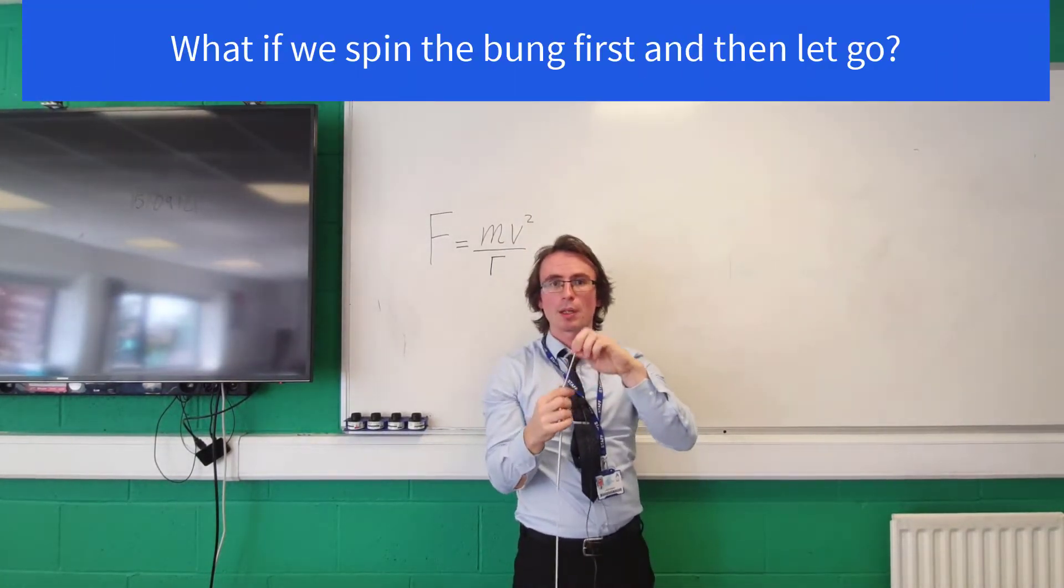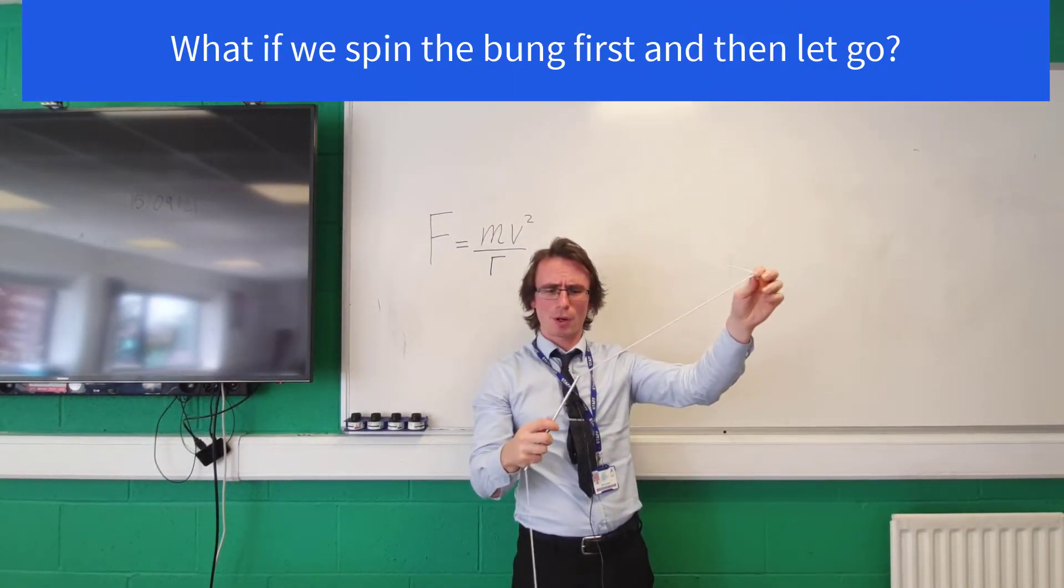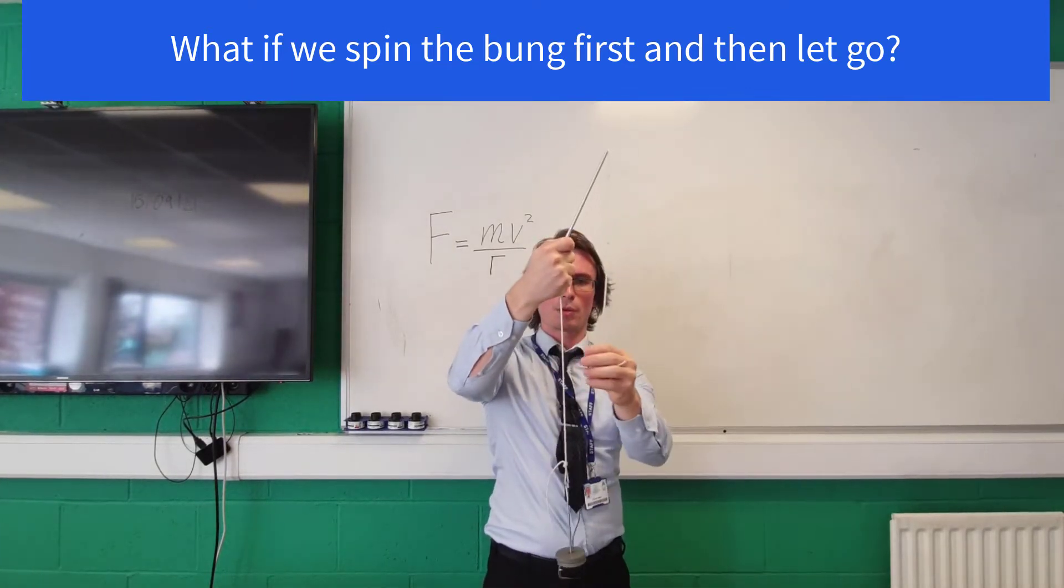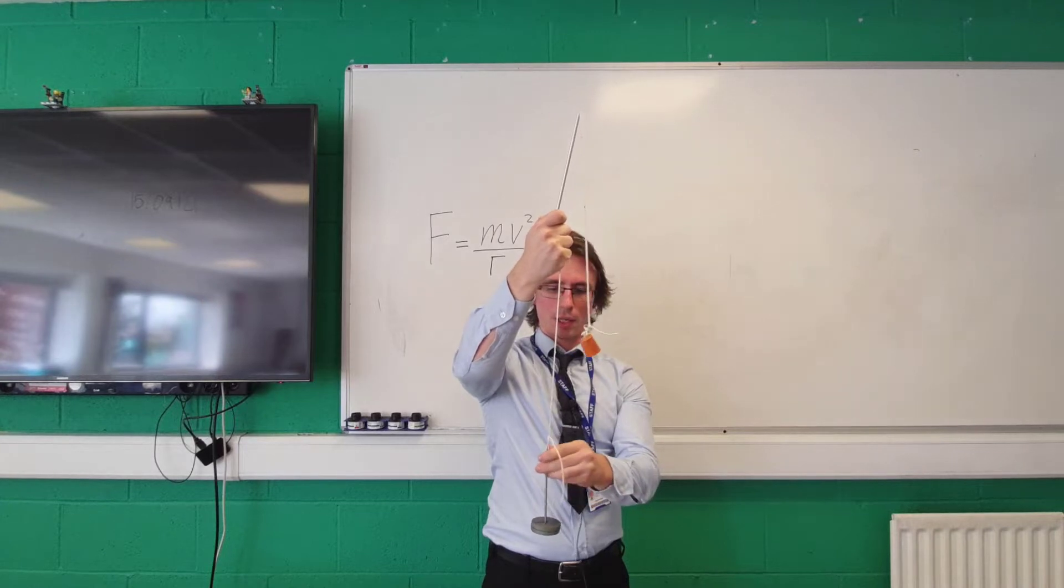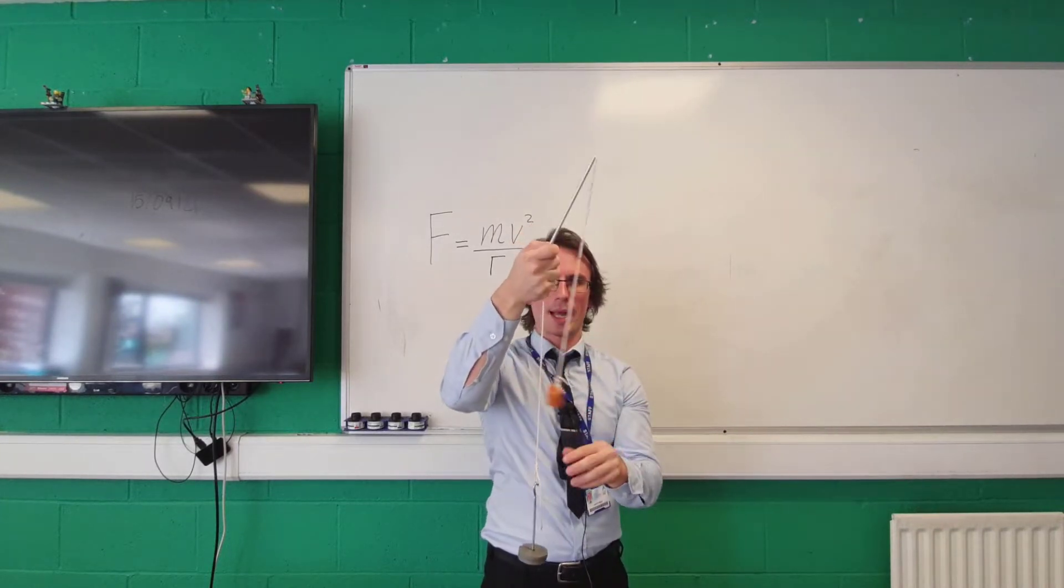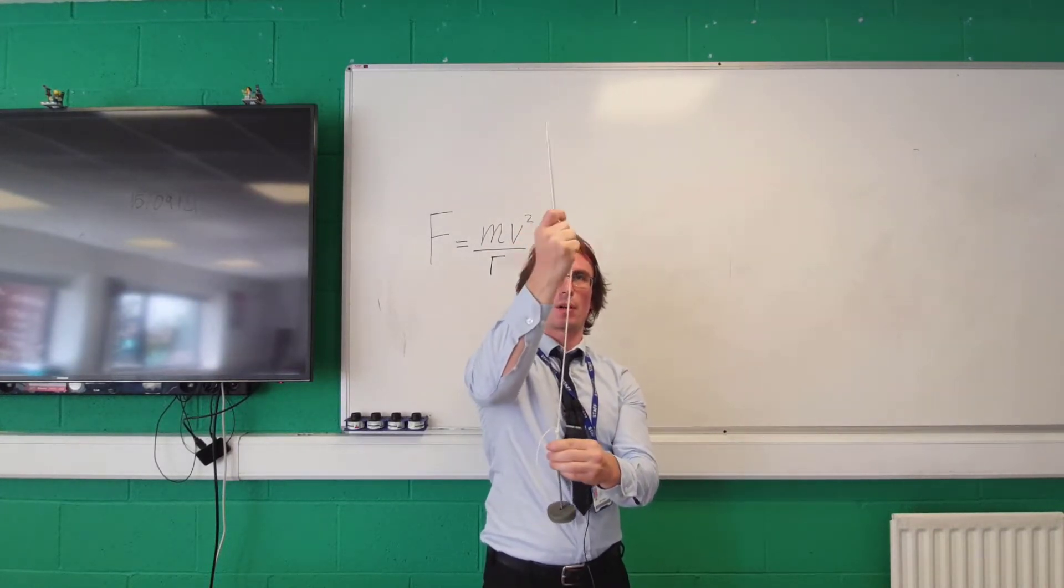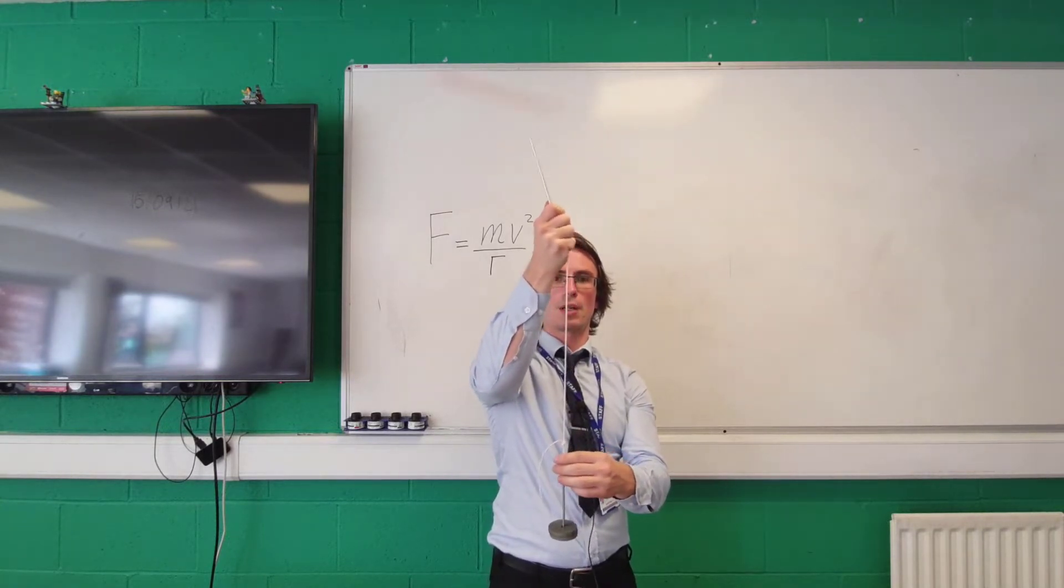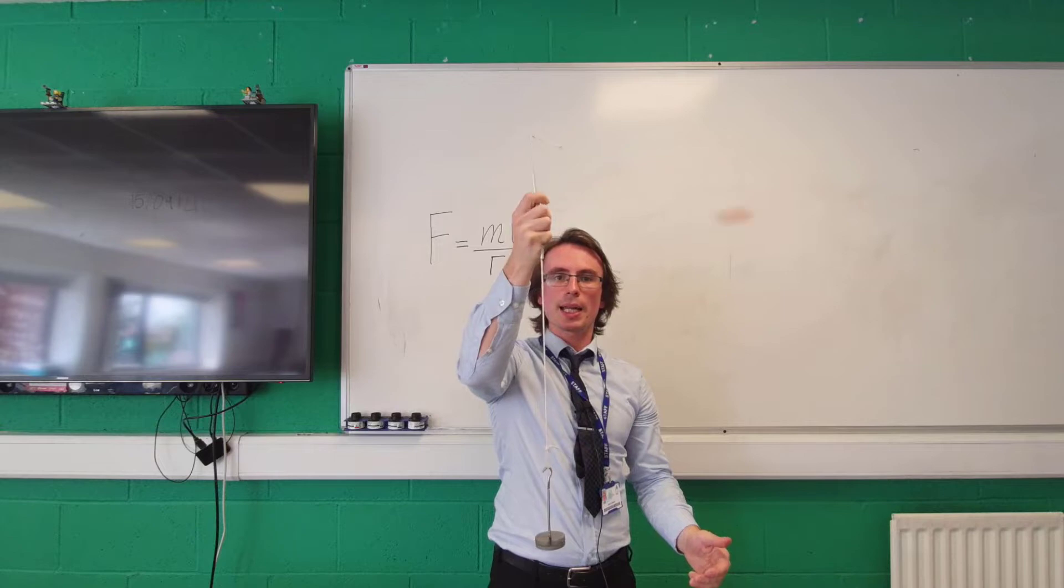However, let's see what happens if I was to start spinning this. So what I'm going to do is hold this here with the mass like this, currently balanced by my hand. Then I'm just going to give the whole string and bung a little bit of velocity and now I'm spinning this and now I'm letting go.